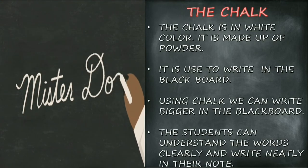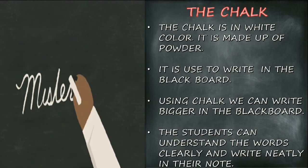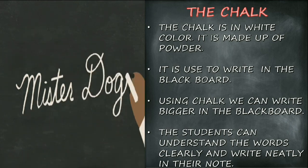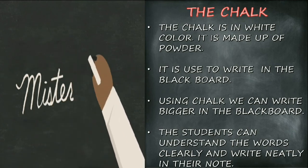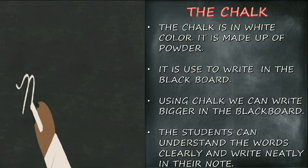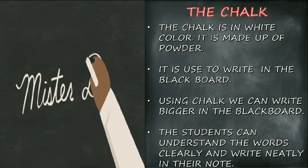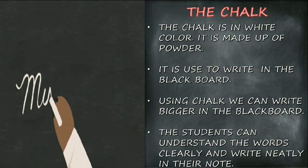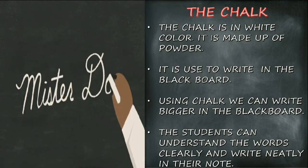The chalk is white in color and cylindrical in shape, made of a powdery substance. When writing on the board, the chalk reduces and powder comes out. It is used to write on the blackboard. Using chalk, we can write in bigger size, which allows students to understand the words clearly and write neatly in their notes.